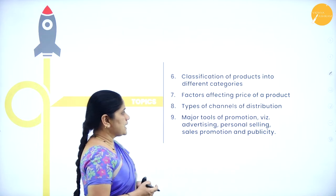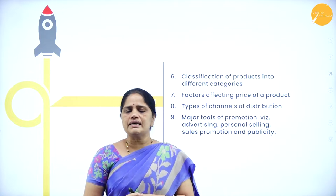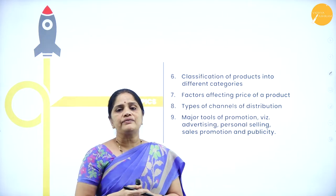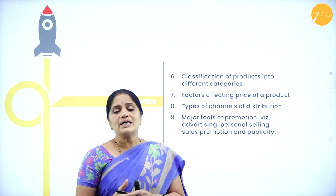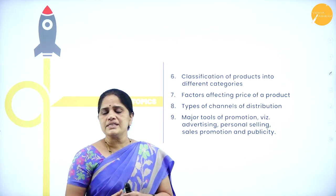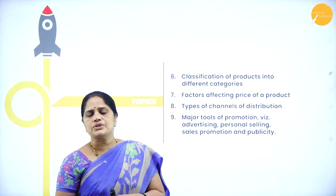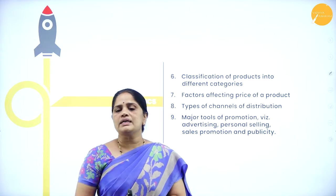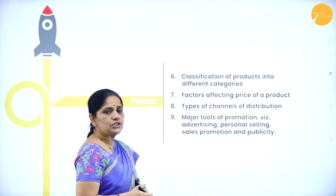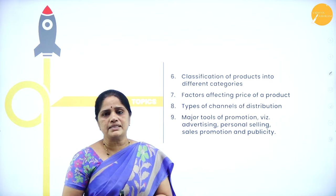We will also be studying the factors affecting the price of a product. A product is a bundle of utility, so whenever we want to use a product, we have to part with a certain price. What are the various factors that go into fixing the price? We will discuss different types of channels of distribution — what channels are used to distribute products all over the country and the world — and the major tools of promotion: advertising, personal selling, sales promotion, and publicity.